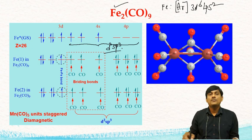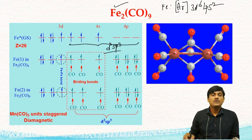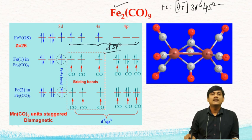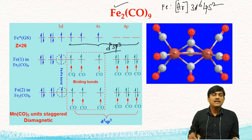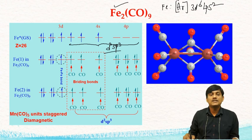The d²sp³ hybridization gives 6 hybridized orbitals. Out of these, 3 have unpaired electrons and 3 are empty. The 3 orbitals with unpaired electrons are filled by bridged CO ligands — each bridged CO donates 1 electron. The 3 empty orbitals are filled by terminal COs, which donate 2 electrons each.